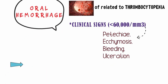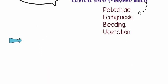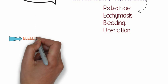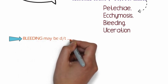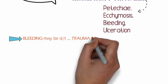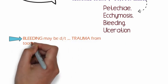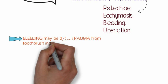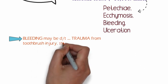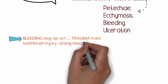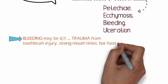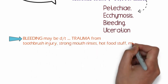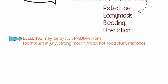Bleeding may be exacerbated by trauma, which can be caused by physical injury due to a toothbrush, chemical injury due to mouth rinses, thermal injury, or bacterial injury by any microbe.